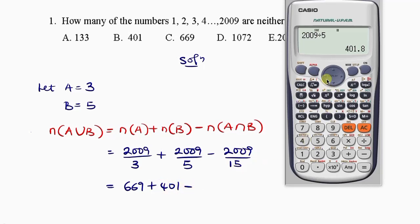Minus. Now we're going to divide by 15. So just press your 15 and tell me what you have. You have 133.